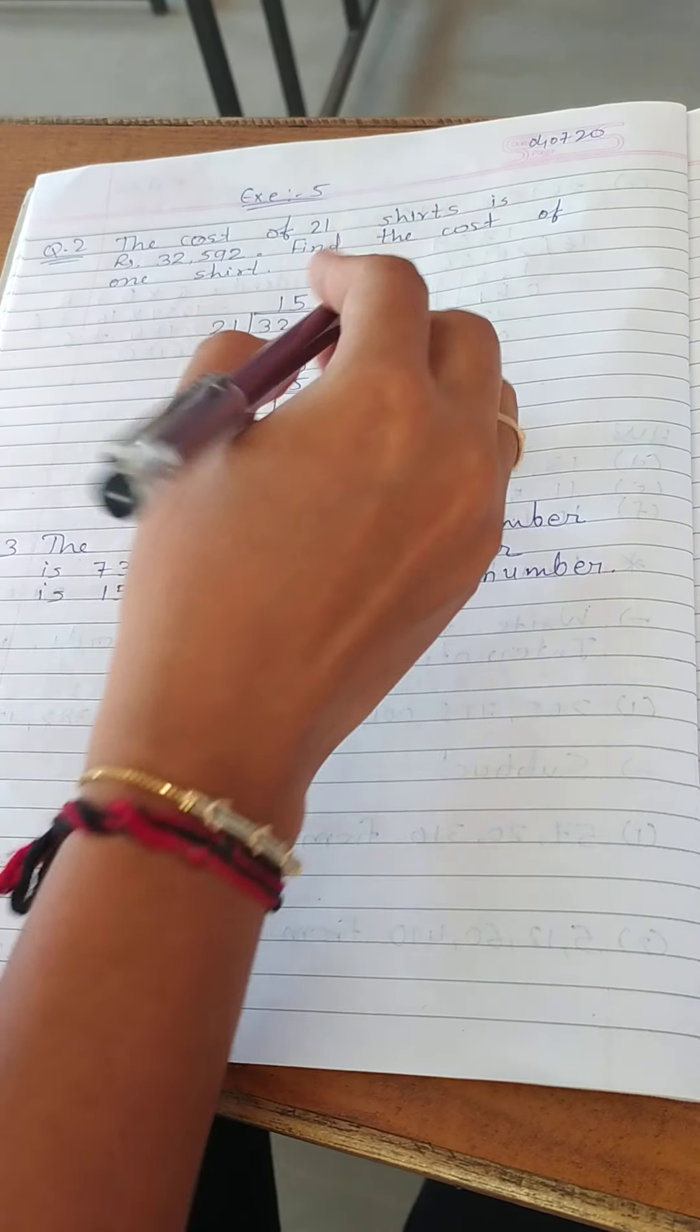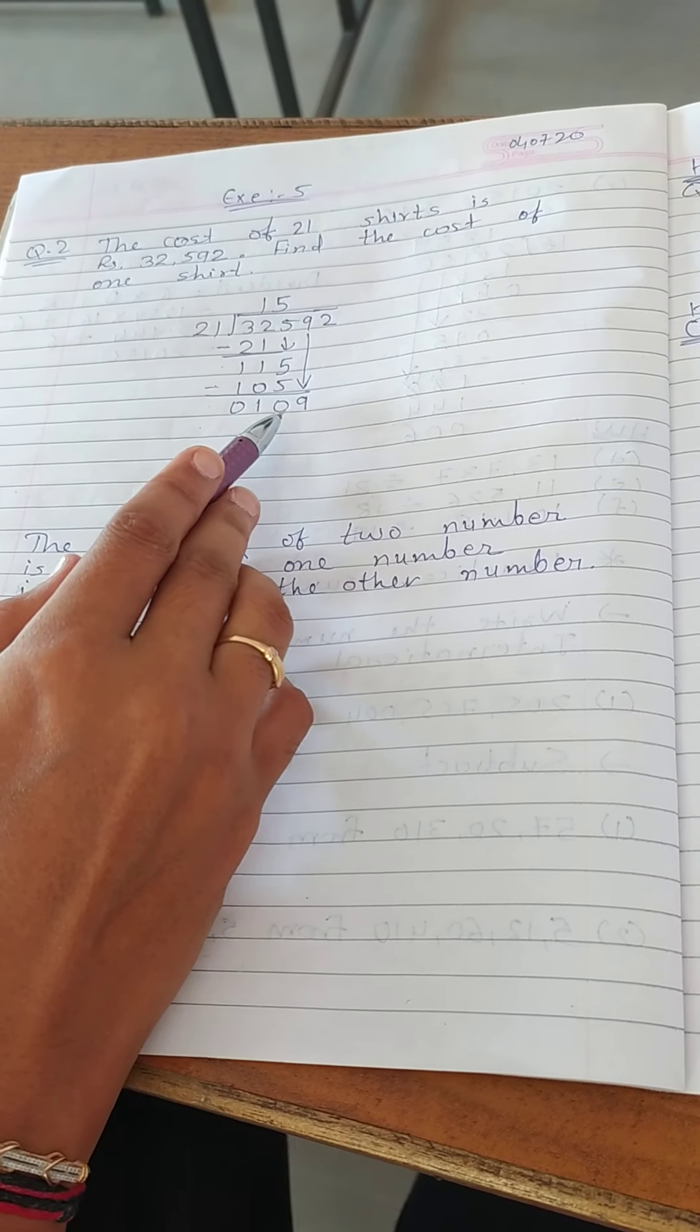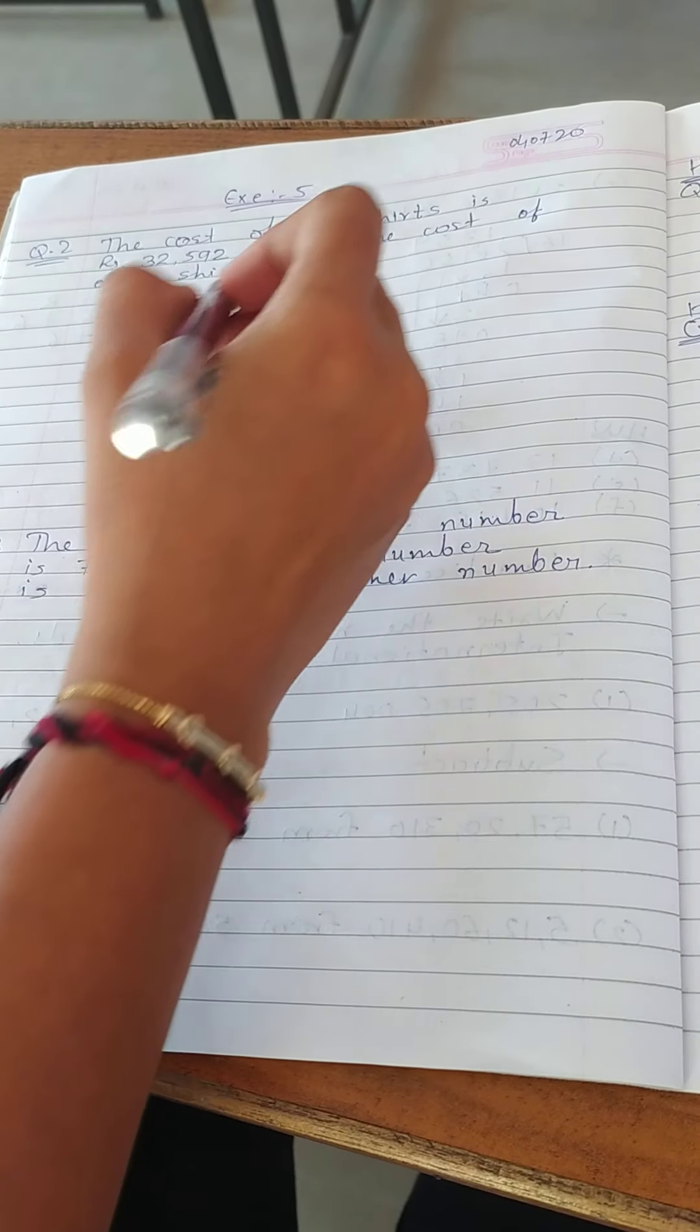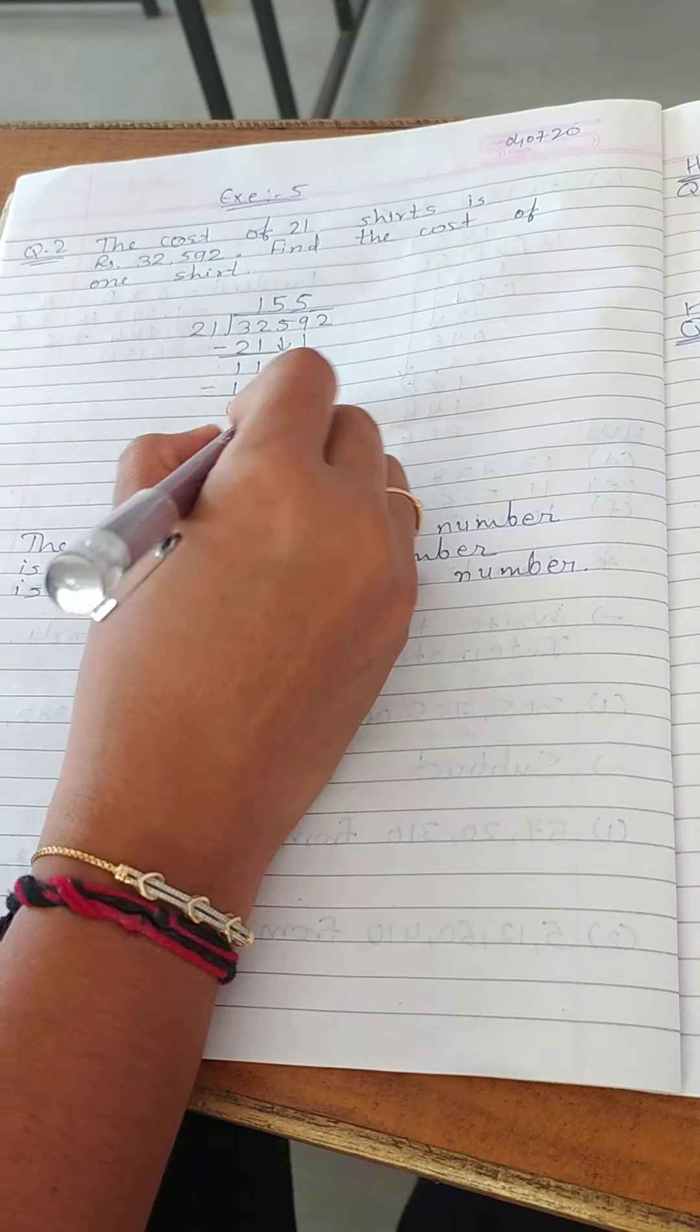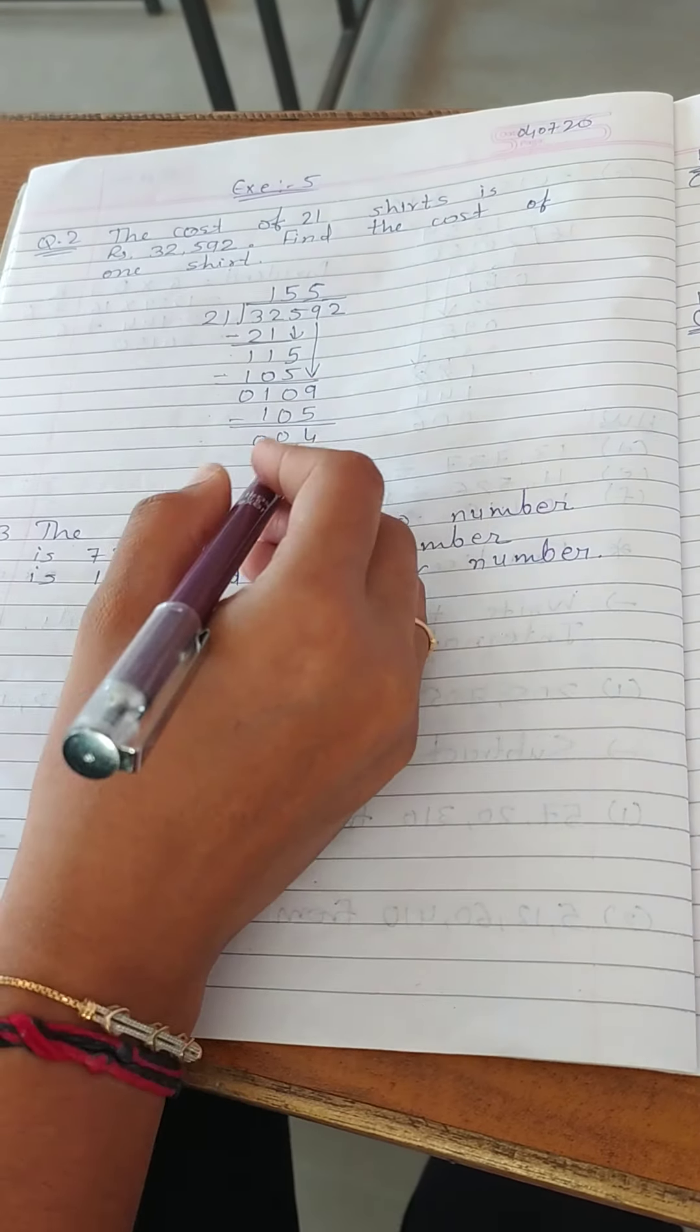Now let's drag the number 9. Now here we get 109. So we can take 21 times 5 equals 105. Here we get 4.